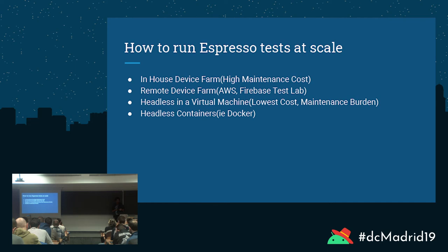There's the idea of the remote device farm, which is the option we went with. A couple I'm listing here are AWS, Firebase Test Lab, and BrowserStack. The idea is that you bundle an APK and test APK and upload it to have the test run remotely. A good thing about this is it gives you access to more devices, you don't have to maintain it in-house, and if there's an issue affecting, say, Samsung devices, another team can look at it for you. There are some headaches with these strategies, which I'll get into next.